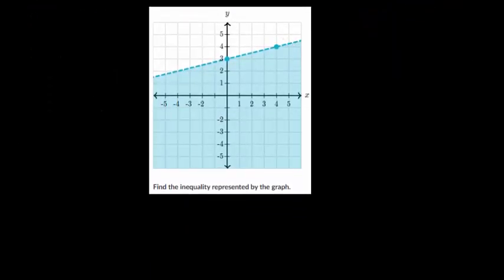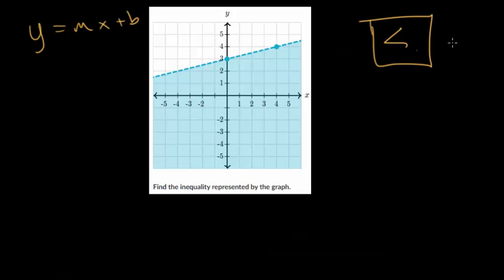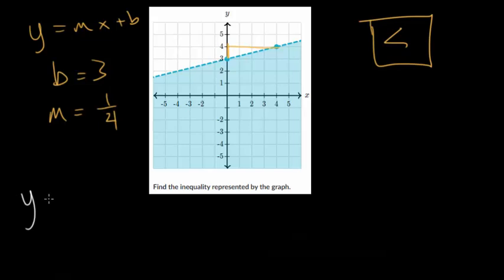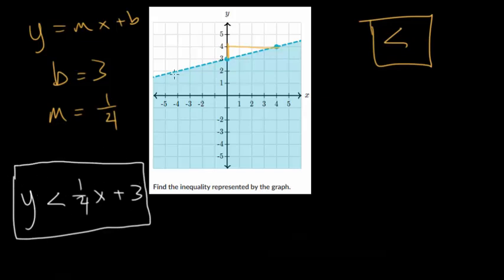The strategy remains the same — figure out the equation of the line. This one's dashed, so we know it won't be greater than or equal to or less than or equal to. We're shading below the line, so it's going to be less than. Our y-intercept B is 3, and the slope looks like up 1 over 4, so our slope is one-fourth. We can write the inequality: y is less than one-fourth x plus 3.